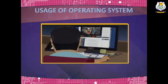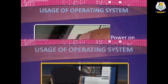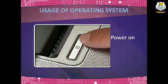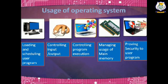Next are the uses of the operating system: easy interaction between user and the computer, starting computer operation automatically after power on, loading and scheduling user programs, controlling input/output, controlling program execution, managing users of main memory, and providing security to the user program.